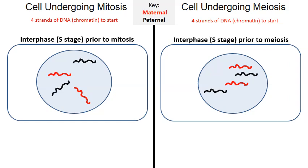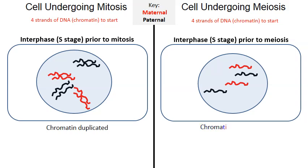The cell on the left is in interphase, specifically the S stage of interphase, prior to mitosis. What happens here is chromatin is duplicated — so the four strands of chromatin are duplicated to become eight. On the right the same thing happens: the chromatin is duplicated. So far you really can't tell any difference between the two processes.